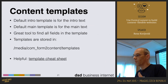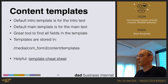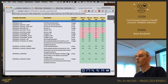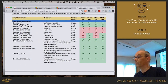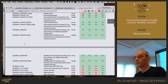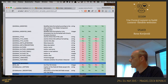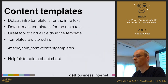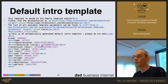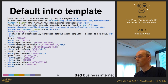About the templates I can use to modify the layout: the default intro template is for the intro text and the default main template is for the main text. That's a great tool to find all the fields that Form2Content created. Templates are stored in the media/com_form2content/templates folder. There is a really handy template cheat sheet available which gives you all the options you can use within your templates — for example, Joomla article ID, article link, category ID, publish dates, created dates, and all fields that Joomla uses.